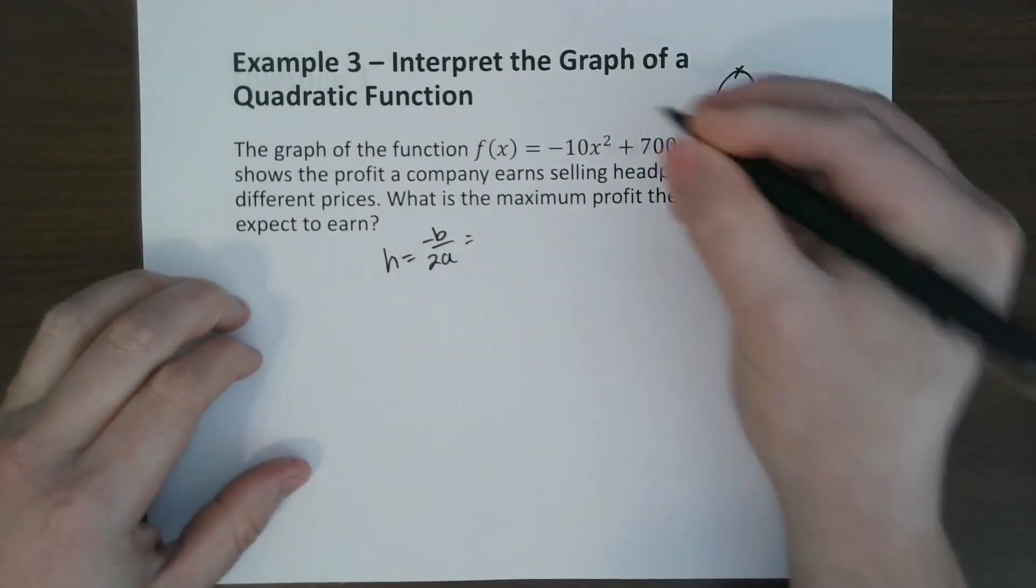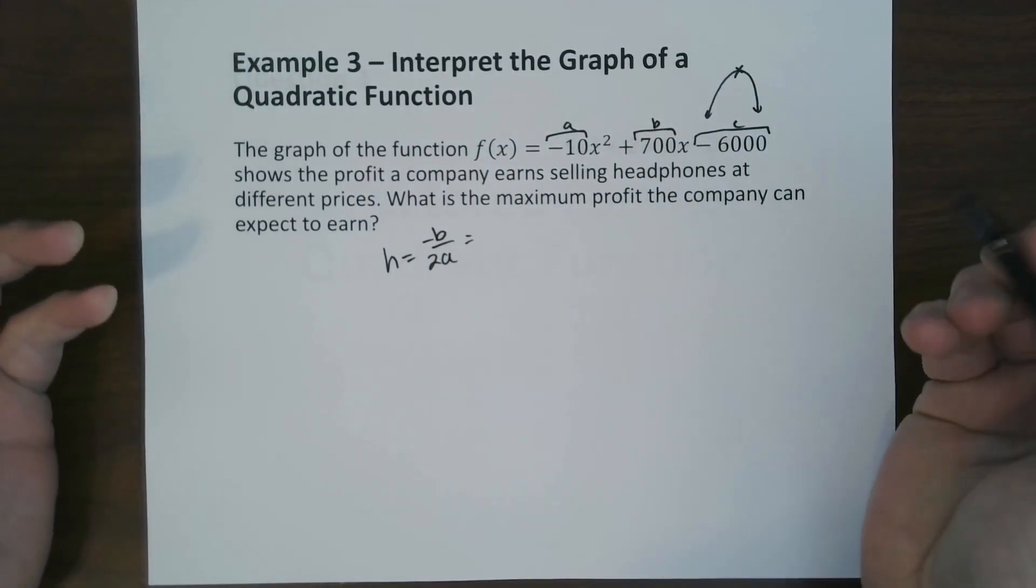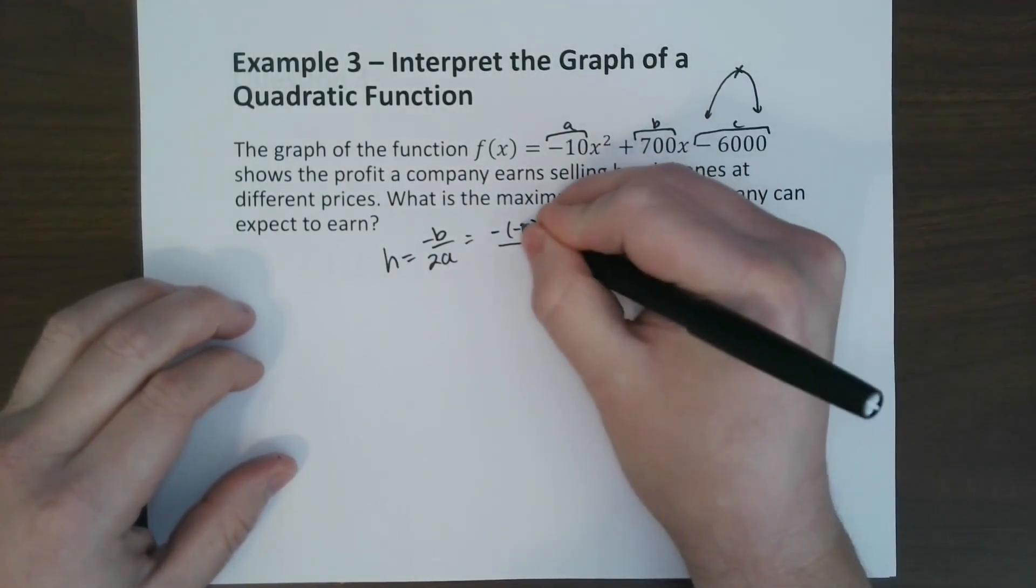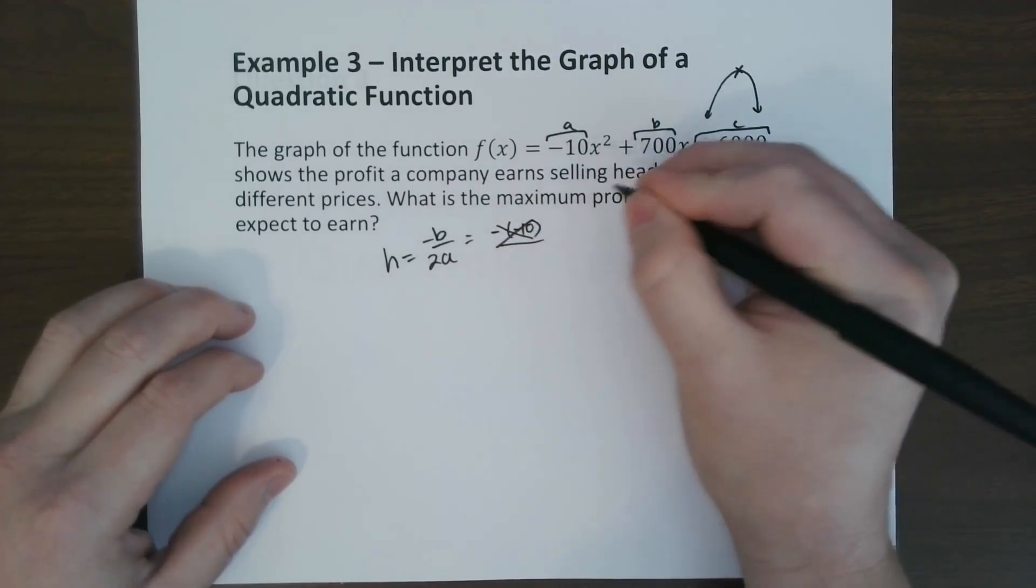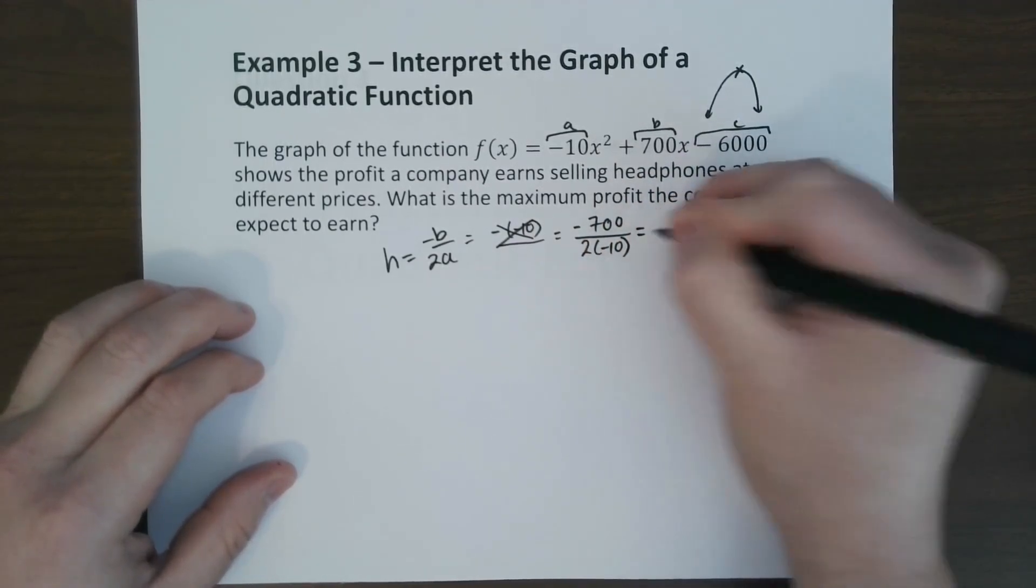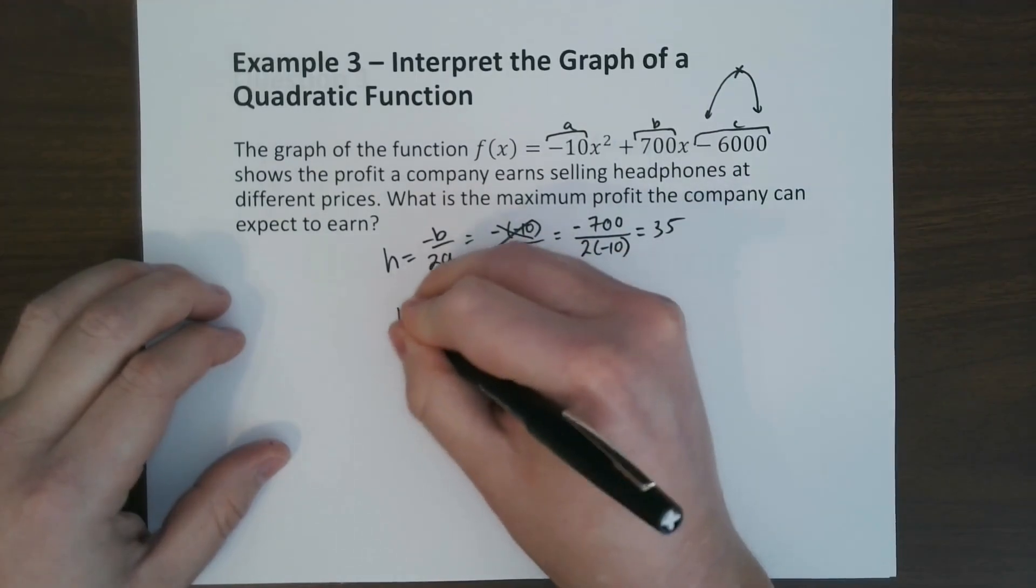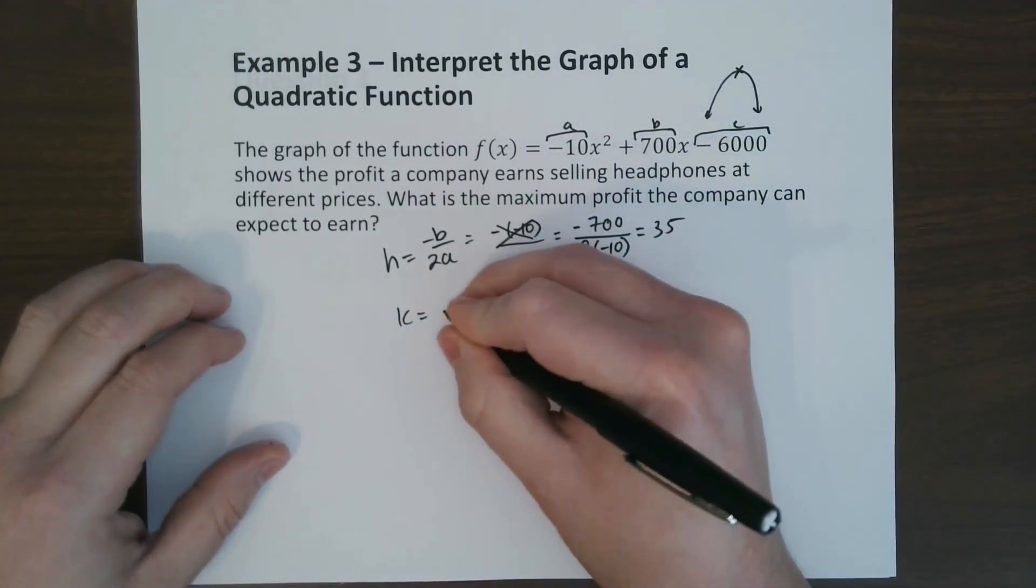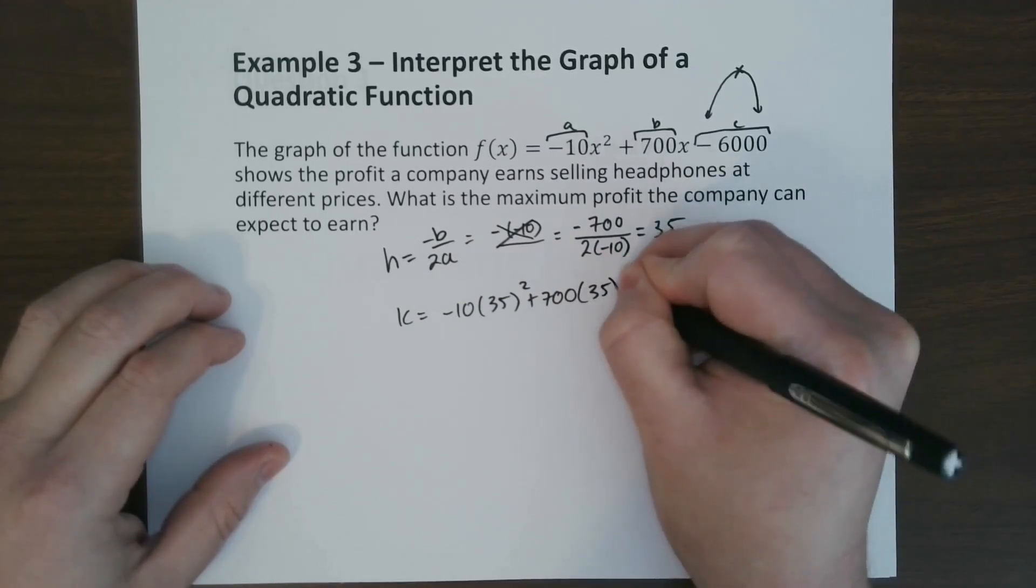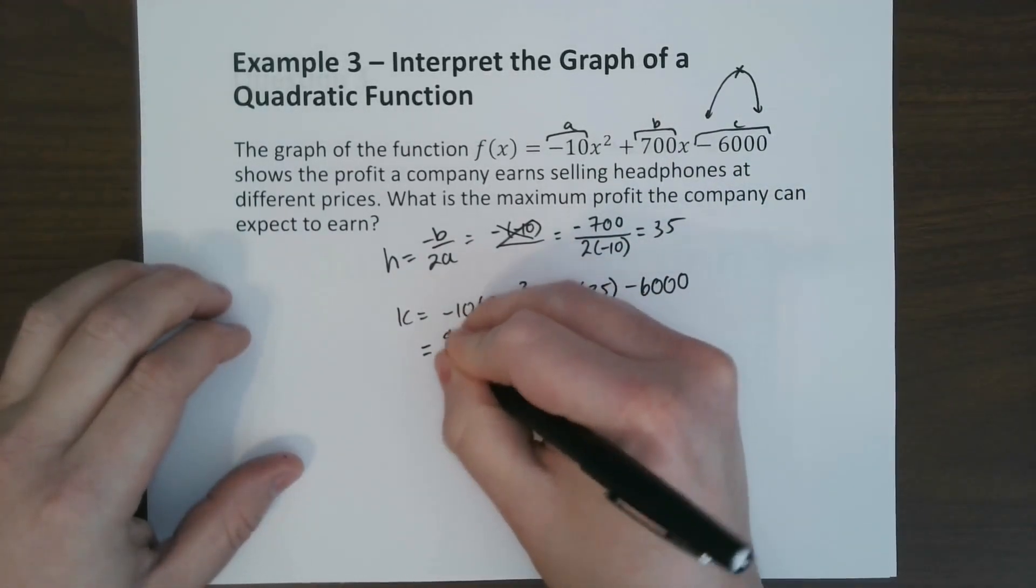So taking a look at this function, this here is a, this is b, this is c. So we just plug those in. So negative, negative 700, over 2 times negative 10, which would be 35. And so once you get 35, you just plug into the equation, and that'll give us our k, which would be negative 10 times 35 squared, plus 700, times 35, minus 6,000. If we plug all that into a calculator, we get 6,250.